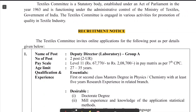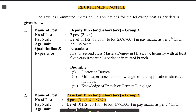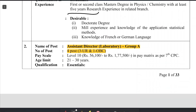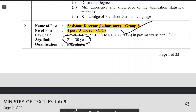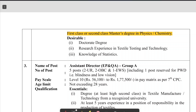Let's discuss the recruitment notice. Post number one is Deputy Director Laboratory Group, which is also for MSc chemistry students but it requires five years of experience — that's why I have discarded this post. The next one is Assistant Director Lab Group A with 4 posts, but the age limit is limited to 21 to 30 years. The eligibility criteria is a first or second class Master's degree in physics or chemistry, but those with MSc chemistry will get the upper hand — once I discuss the syllabus you will understand that this post actually belongs to MSc chemistry.